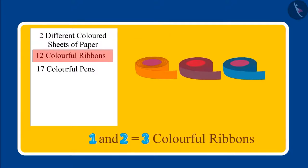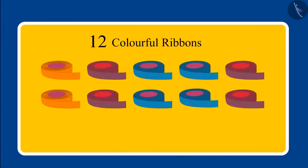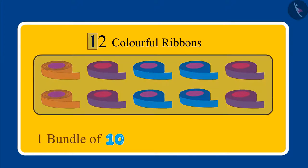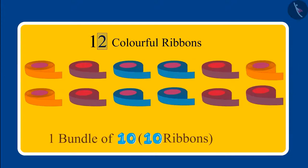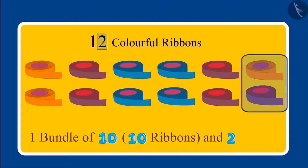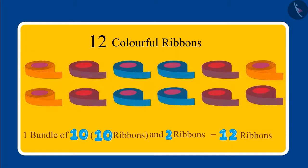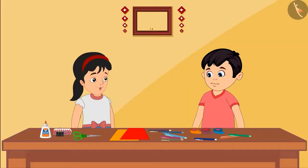Below that, it says one and two — which Chotu read as three colorful ribbons by adding one and two. But we don't read this number like that. Here, one means one bundle of ten, which is ten ribbons, and two means two more ribbons. So in total it becomes twelve ribbons.